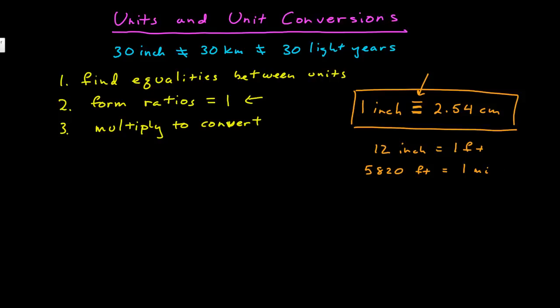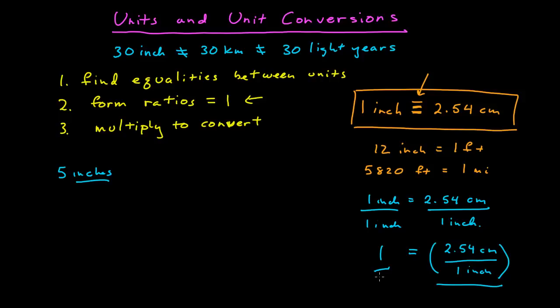So if, just a quick example, if we have say 5 inches, and I want to convert that to centimeters, the first thing I do is I take my ratio over here. Here's my inch, 2.54 centimeters. And from that relationship, I form a ratio by dividing each side by the unit I have. This gives me a number 1 equal to the ratio 2.54 centimeters over 1 inch. And since this ratio is